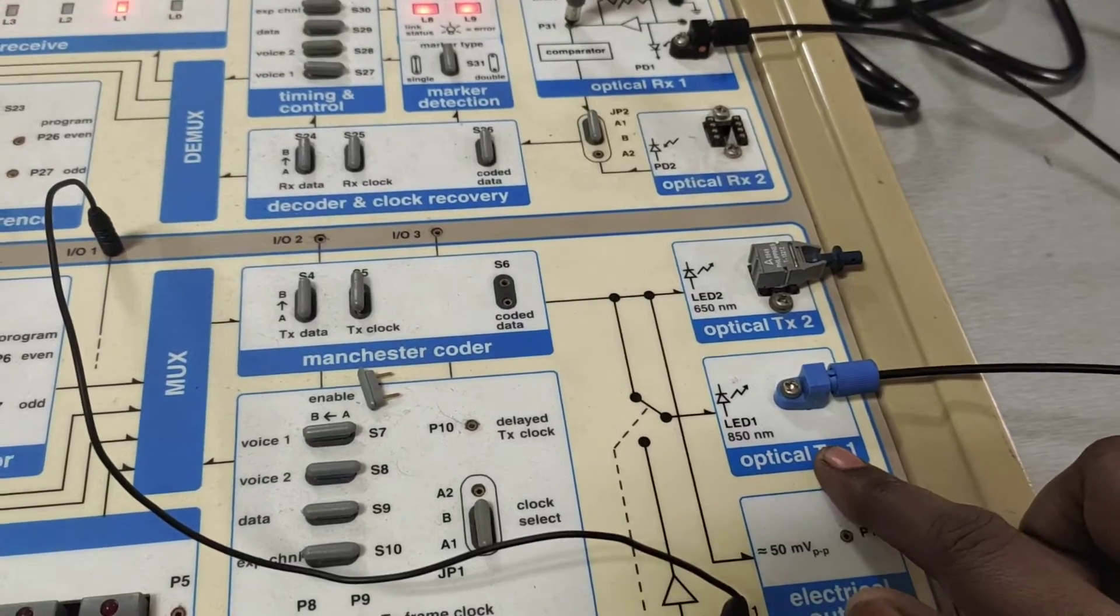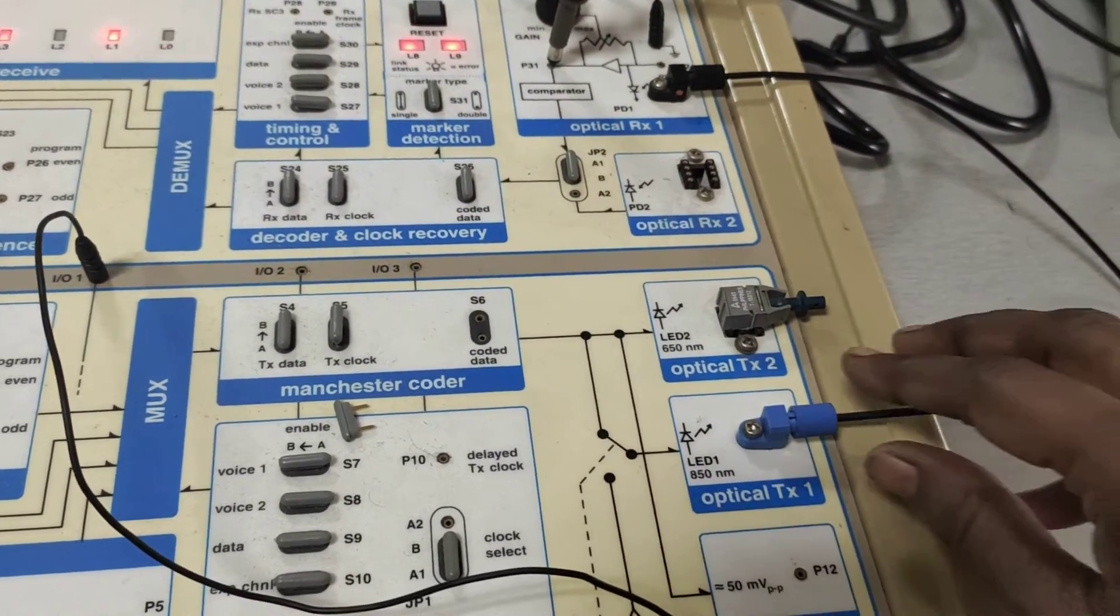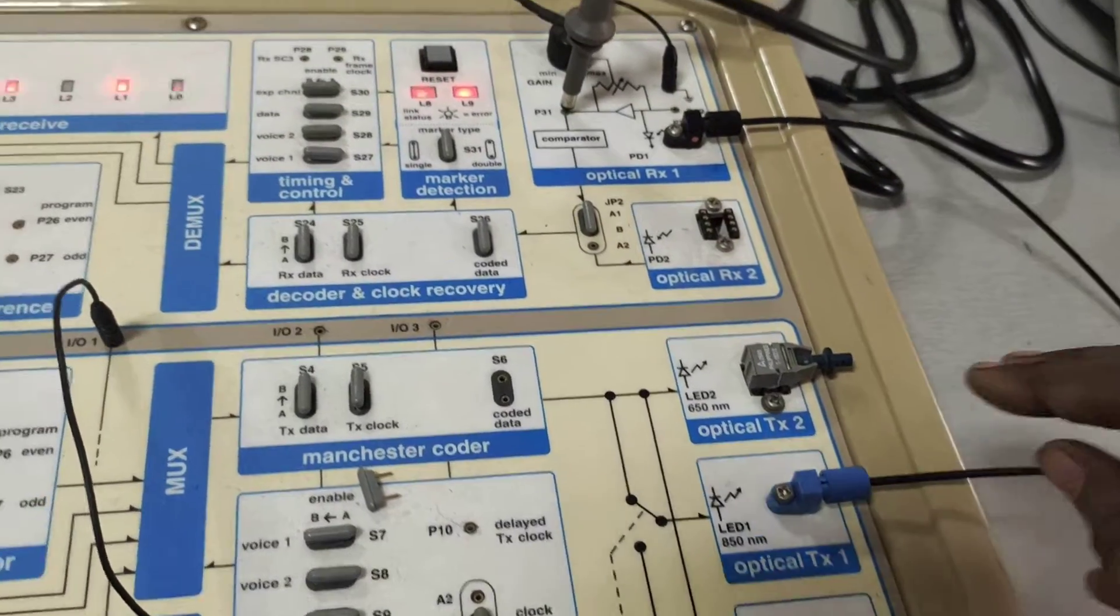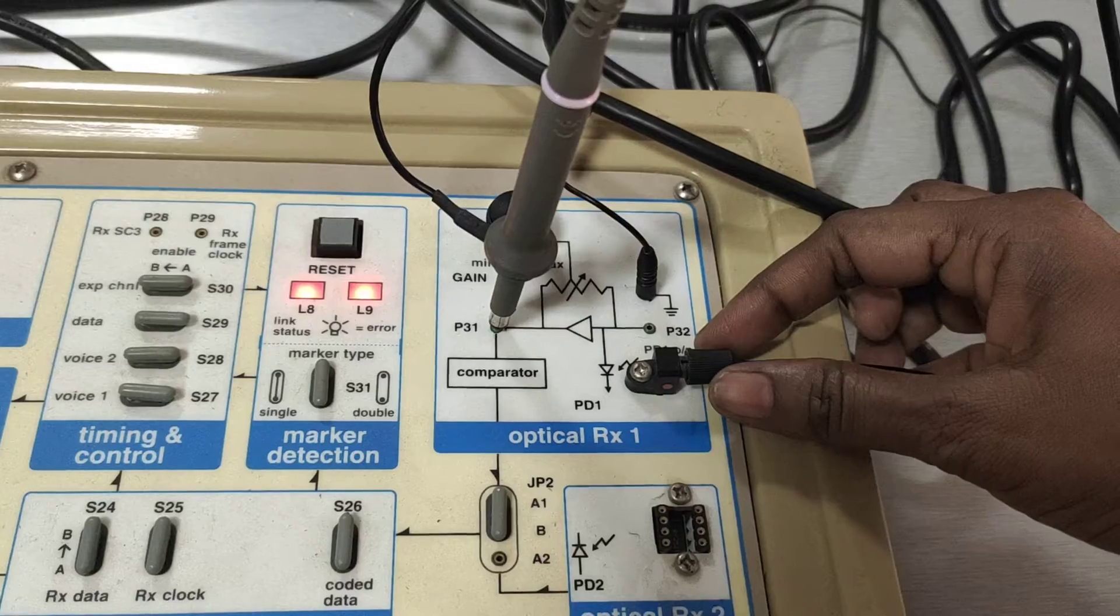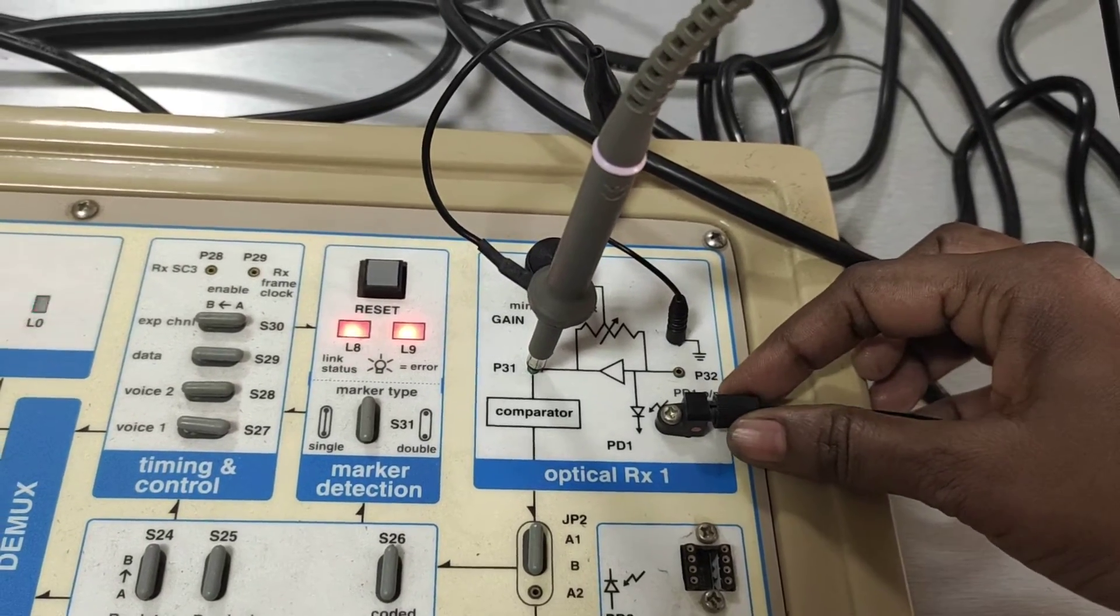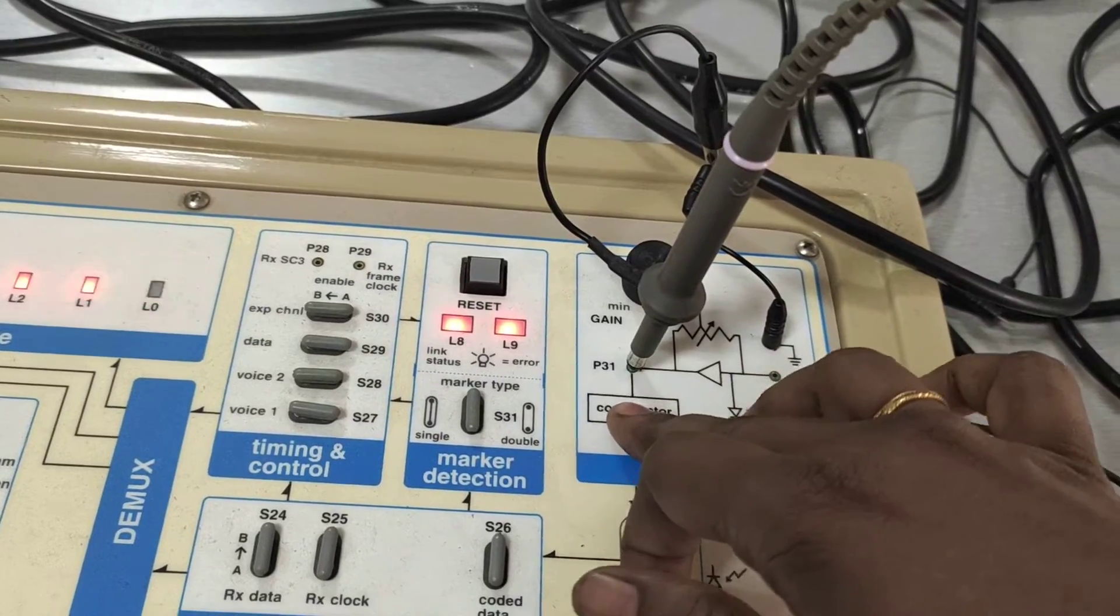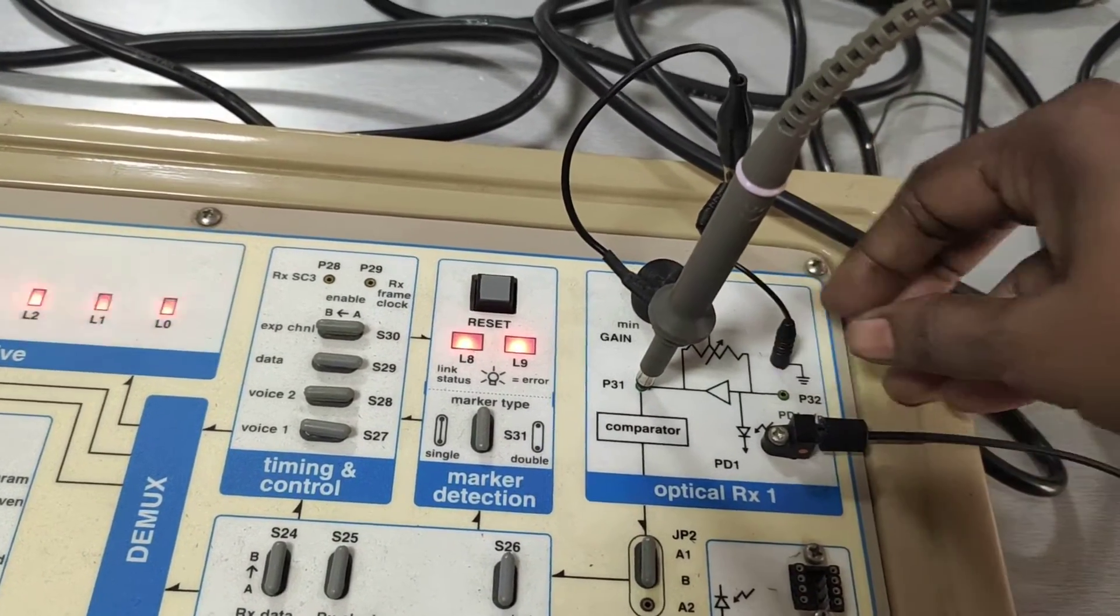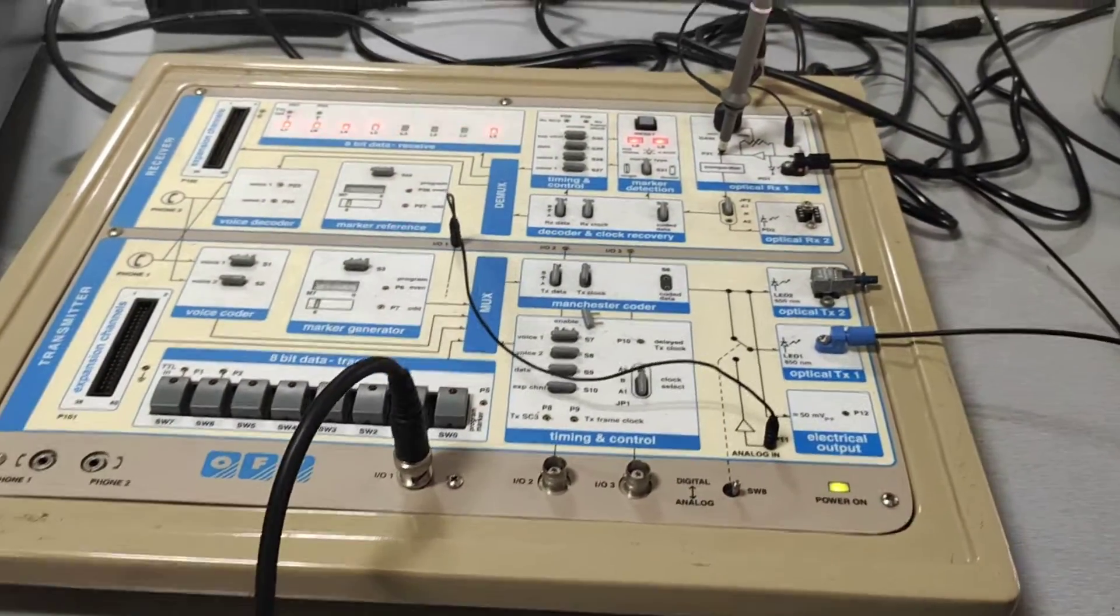Optical transmitter 1 consists of an LED source with 850 nanometer wavelength. One end of the cable is connected to transmitter 1 and another end of the cable is connected to optical receiver block 1. The output will be taken at P31 point. The ground terminal is connected here. So this is the general connection.